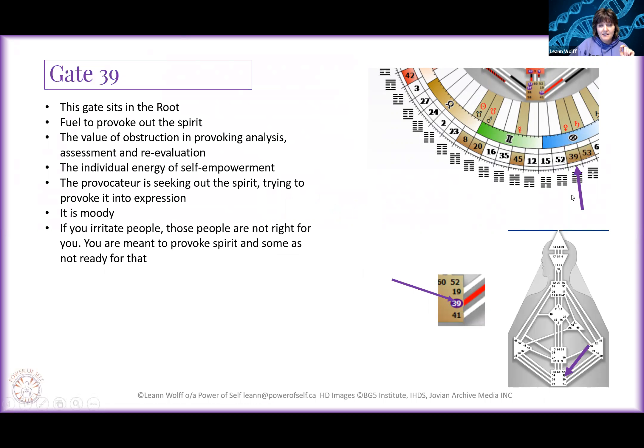The 39th gate sits in the Root, so here we have another Root gate, but this one is in the individual circuitry. What comes along with the individual circuitry is mutation and melancholy. There's a fuel to provoke the spirit. The 39th gate is pointing up to the 55th gate and it's provoking the spirit of others.